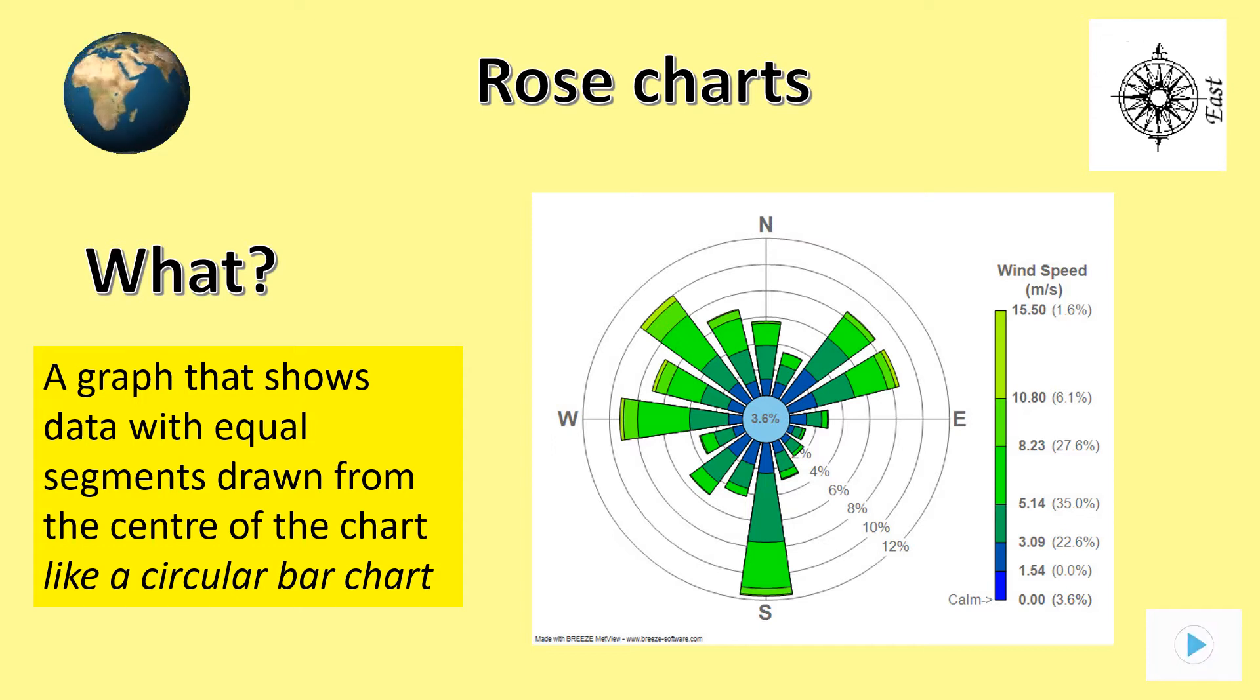Most wind comes from the south, however, it hasn't been greater than 10.8 metres per second. You can tell this by looking carefully at the key. Pause the show to look more closely at the rose chart example here.